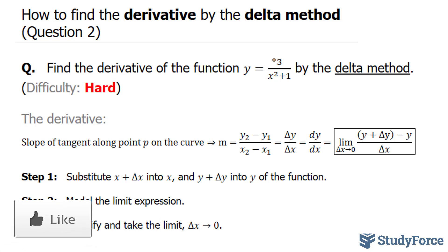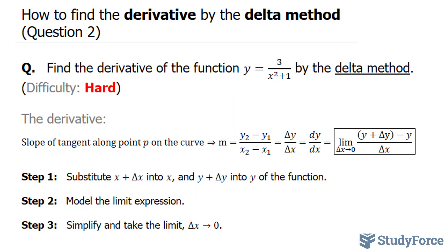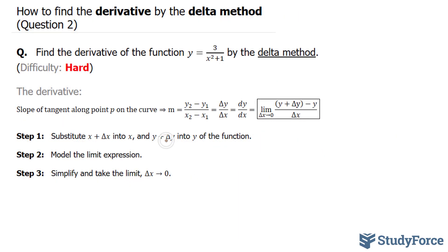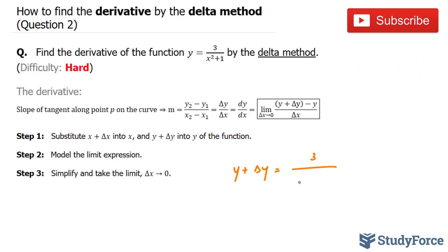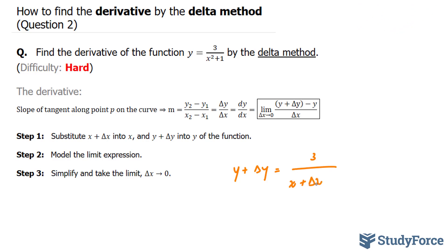This question requires a lot of room, so make sure you have enough room while working along with me. Substituting y plus delta y, I end up with y plus delta y is equal to 3 over x plus delta x to the power of 2 plus 1. In step number 2, we have to manipulate this part so that it looks like the standard form, so I can substitute it into the numerator of this limit.